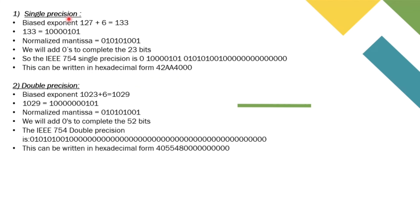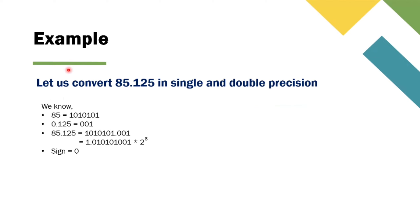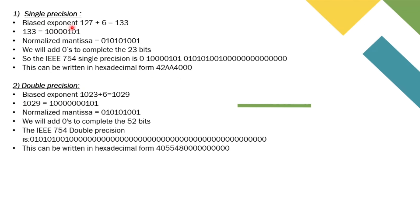Single precision floating point format is a computer number format usually occupying 32 bits in computer memory. It represents a wide dynamic range of numeric values using a floating radix point. For 85.125, the biased exponent is 127 + 6 = 133. In binary format, 133 is 10000101. Therefore its normalized mantissa is 010101001, and we add zeros to complete the 23 bits. The IEEE 754 single precision value is as shown on the screen, which can also be written in hexadecimal form as 42AA4000.